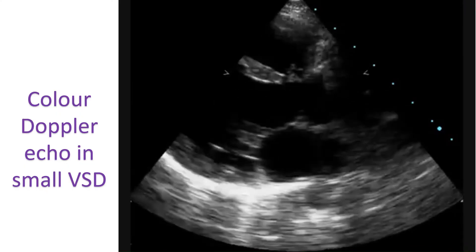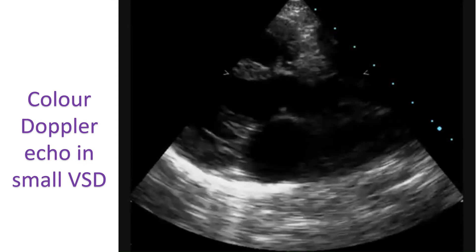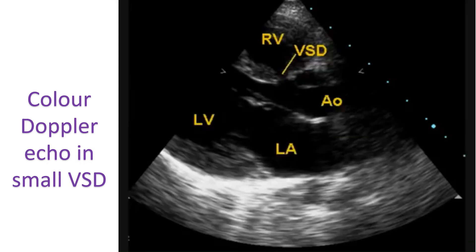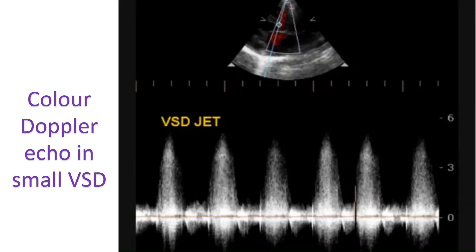Color Doppler echocardiography is very useful in giving a quick visual assessment of regurgitation and stenosis of heart valves. It will also show abnormal flows such as an atrial or ventricular septal defect.